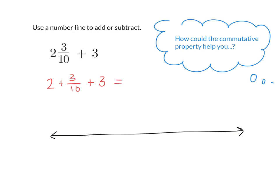So could I say that this is 2 plus 3, get rid of the whole number, take care of the whole numbers first, and then add 3 tenths at the end? Okay. I think that will help us.